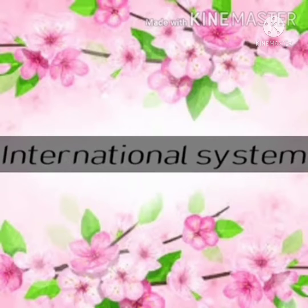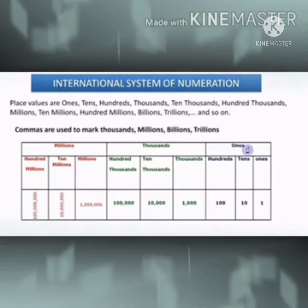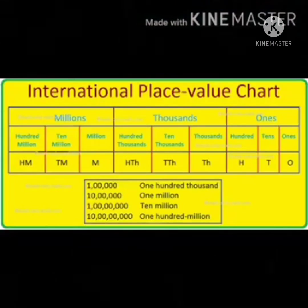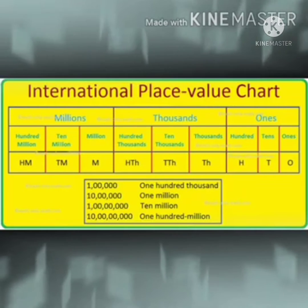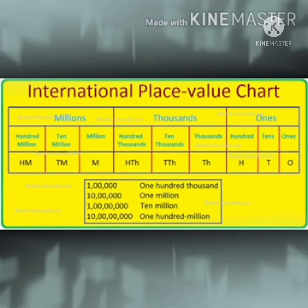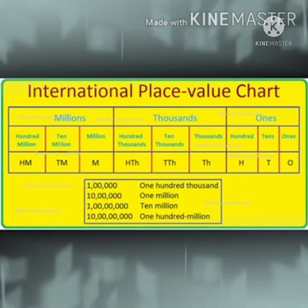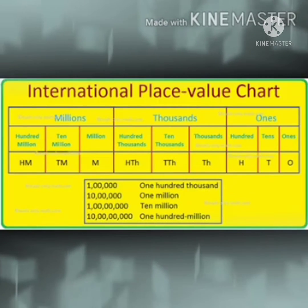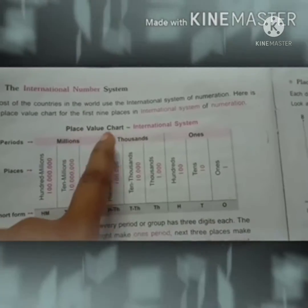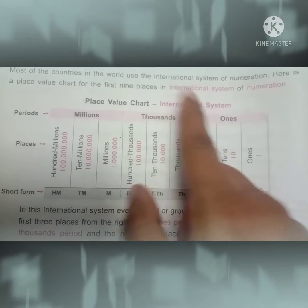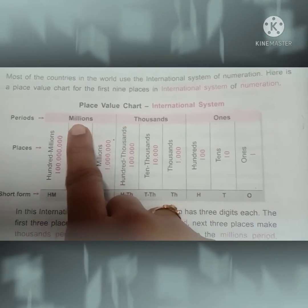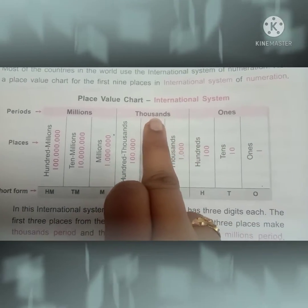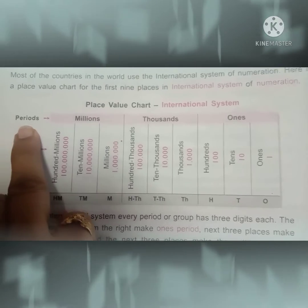Now let us look at the international number system — how to read and write in the international system. In this system we have three periods: ones, thousands, and millions. Each period has its own place values. In the ones period: ones, tens, hundreds. In the thousands period: thousands, ten thousands, hundred thousands. In the millions period: millions, ten millions, hundred millions.